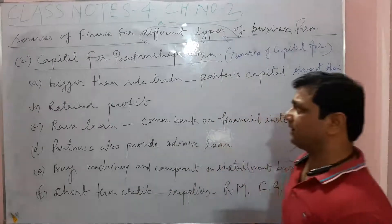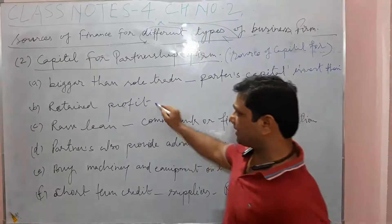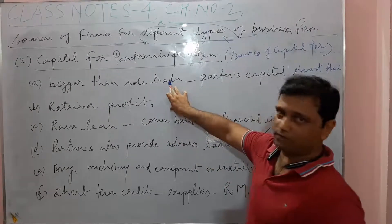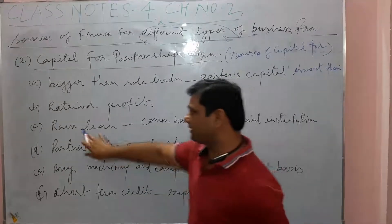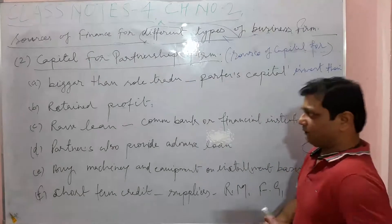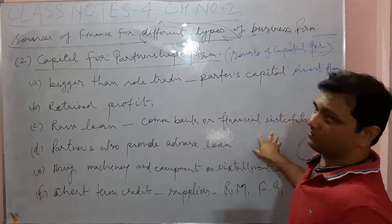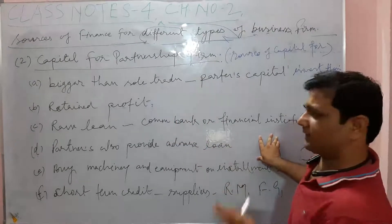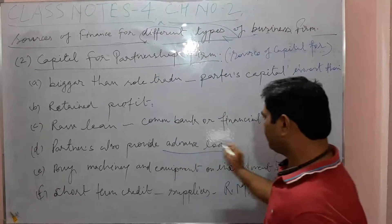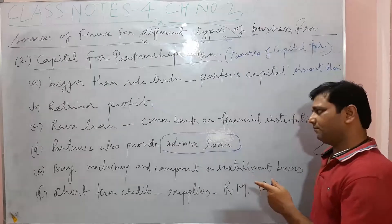The second point for partnership is retained profit — the same concept as sole proprietorship, where the net profit is reinvested back into the business. The third point is the same: raising loans from commercial banks and financial institutions. Partnership firms can also raise funds from banks, same as sole proprietorship.